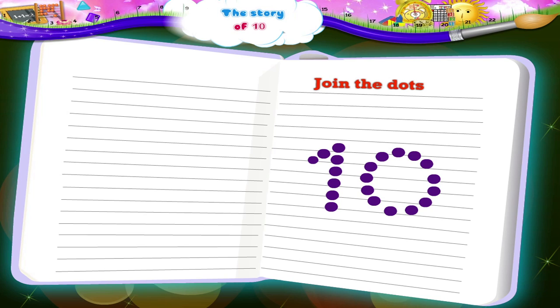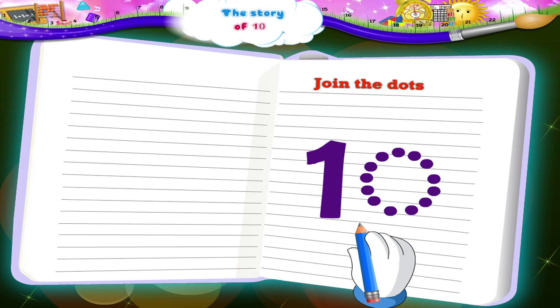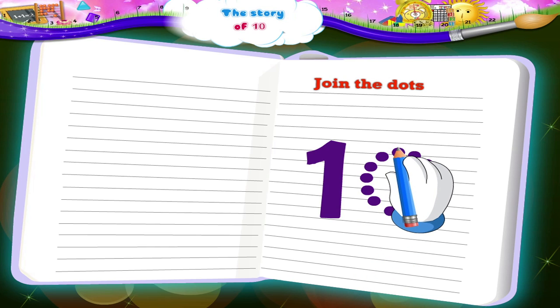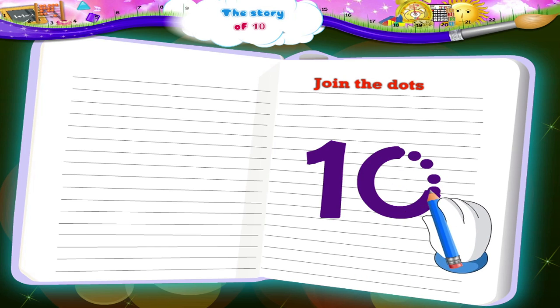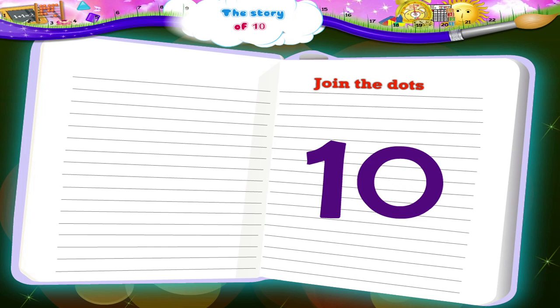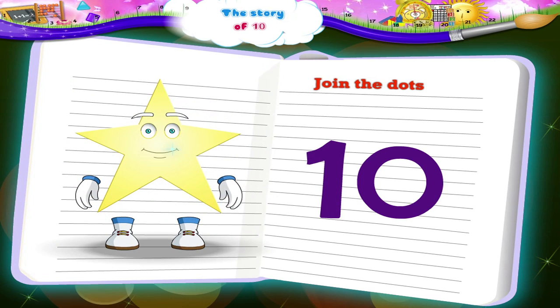Join the dots. First is the number one, then the number zero. It forms the number ten.